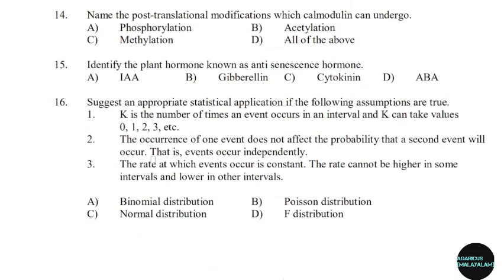14th question: Name the post-translational modification which calmodulin can undergo. Correct answer: Option D — All of the above.